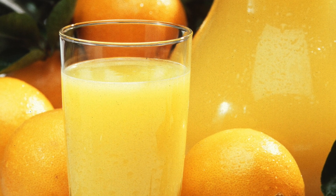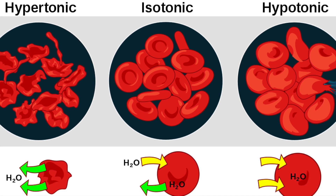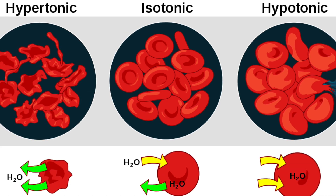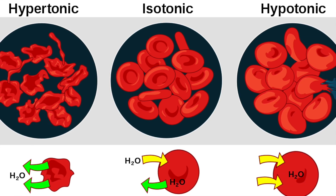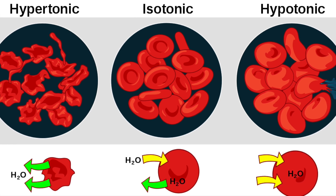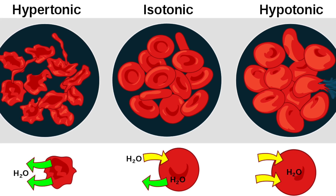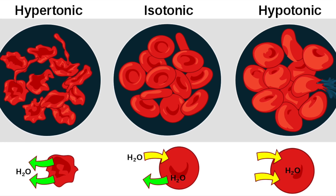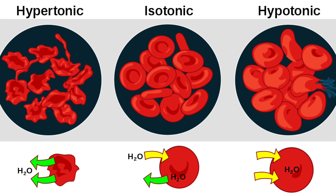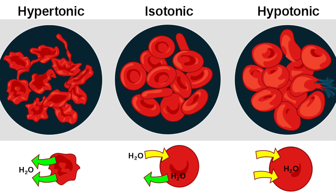There is some important terminology to know. If the concentration of solutes in the solution outside the cell is the same as the internal concentration, the solution is said to be isotonic to the cell. If the concentration of solutes outside the cell is higher than the internal concentration, the solution is hypertonic to the cell. If the concentration of solutes outside the cell is lower than the internal concentration, the solution is hypotonic to the cell.